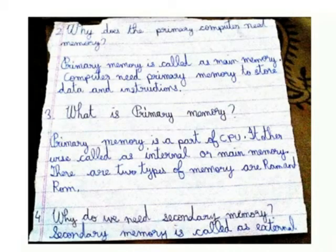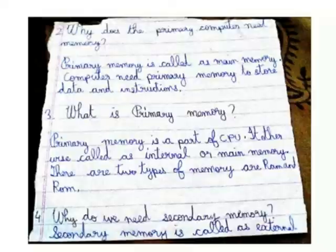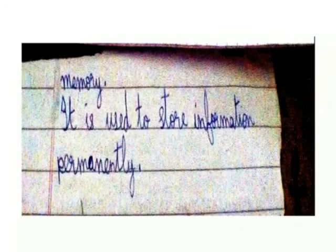Why does the computer need primary memory? Primary memory is called main memory. The computer needs primary memory to store data on the system. What is primary memory? Primary memory is a part of CPU. It is also called internal or main memory. Why do we need secondary memory? Secondary memory is called external memory. It is used to store information permanently.